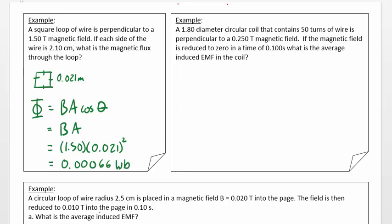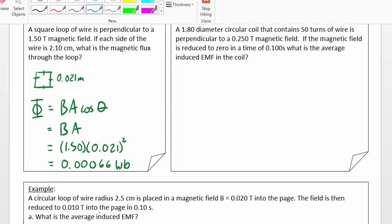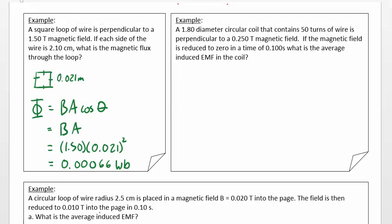Okay. Now, our next example, we've got a circular coil. And it has a diameter of 1.8 meters, which means the radius would be equal to 0.90 meters. And so to find the EMF that's generated, we know that EMF is equal to negative N delta phi over T.